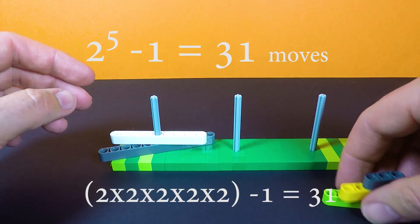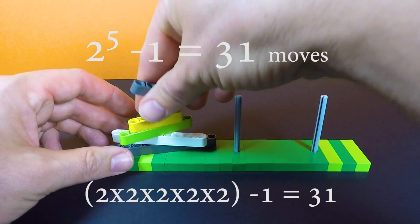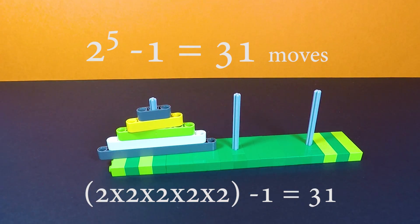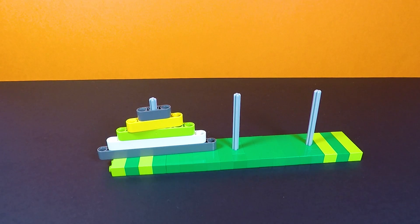And the minimum amount of moves you'll need for this one is 2 to the power of 5, which is 32 minus 1, should be 31 moves. I'm not going to solve that for you here today. That's one for you to challenge yourself on. So just give it a try and see how you go.